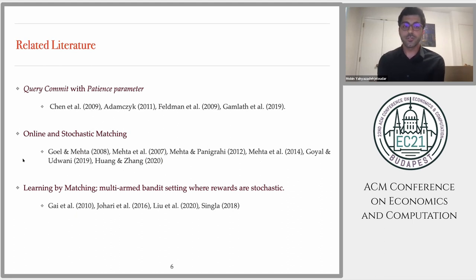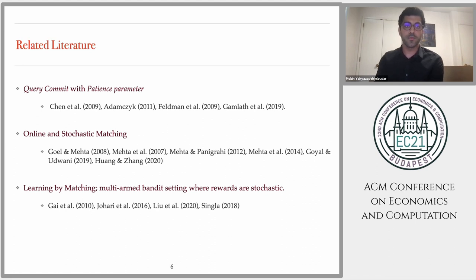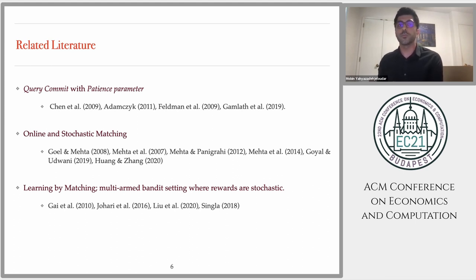In the existing literature, the most similar setting to our model is query commit, where you query edges in a sequence, you have to commit to successful edges, and matched agent edges must form a matching. There is also a vast body of work on online stochastic matching, where vertices on one side of a graph arrive online. Another somewhat similar setting is the multi-armed bandit in bipartite graphs, where rewards are stochastic and the platform learns a desirable matching over time.